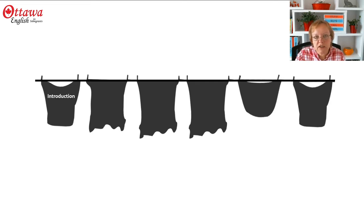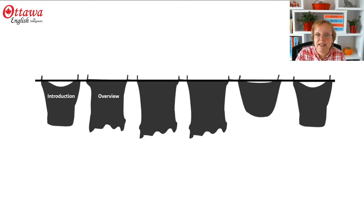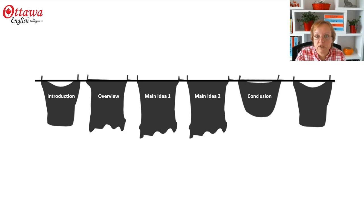The first thing in your presentation is an introduction, where you tell your audience what you're going to talk about. Following that, you'll have an overview — what do these charts look like from the other side of the room when you can't see any details? Then you're going to have two main ideas that you'll develop with details. Following that, you'll draw a conclusion.